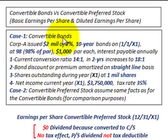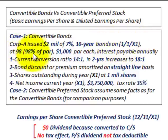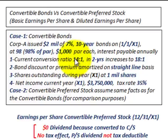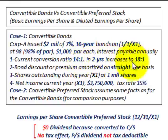For case one, convertible bonds: Corporation A has issued $2 million of 7%, 10-year bonds on 1/1/X1. They were issued at 98% of par — a discount — with a par value of $1,000 per bond. Interest is paid annually. The current conversion ratio at year one is 14 to 1, meaning 14 shares of common stock per bond converted. In two years, that ratio increases to 18 to 1.